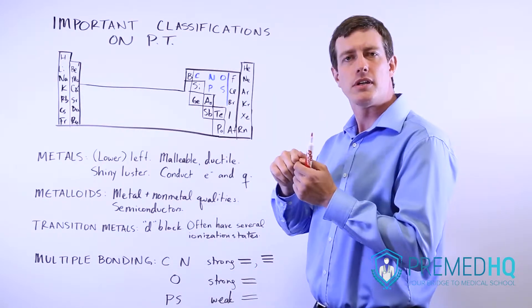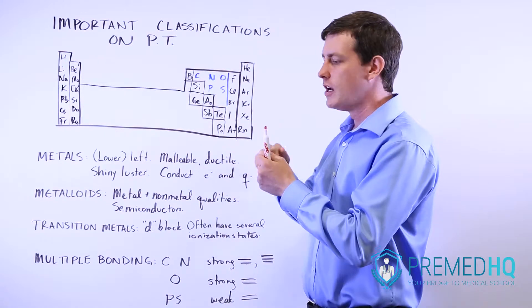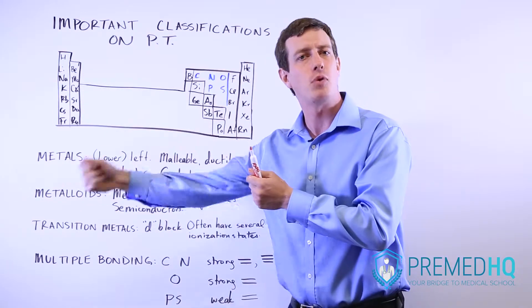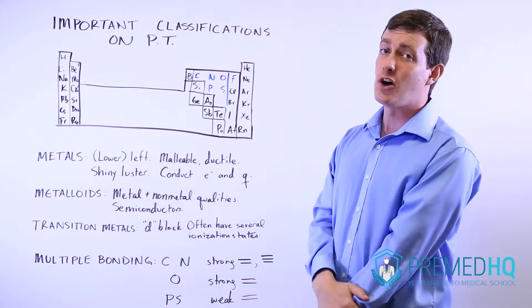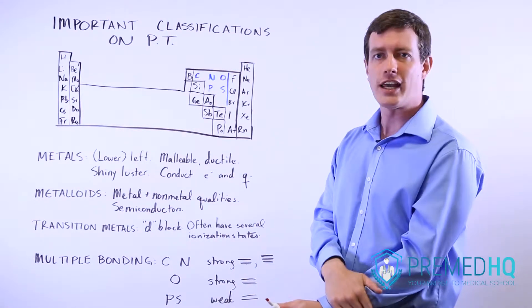Ductility is its ability to be stretched, or perhaps you can stretch it into a pipe or wire or tube or something along those lines. Metals are also notable because they have a shiny luster.